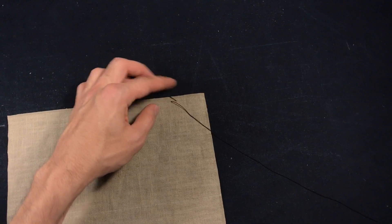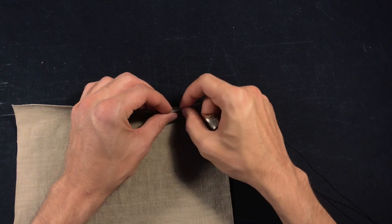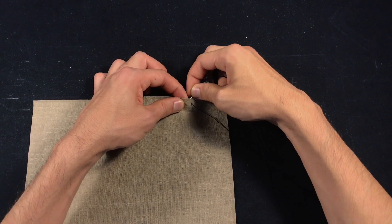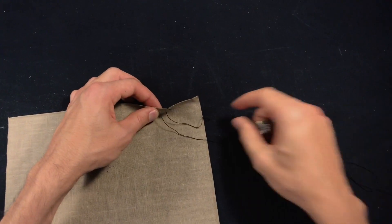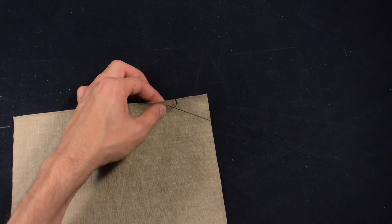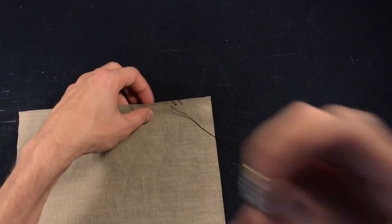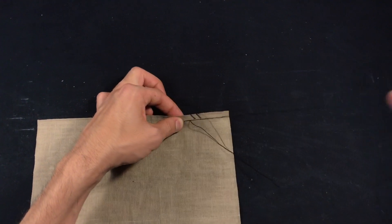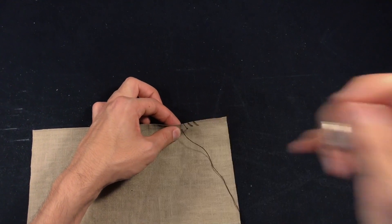And you do the same thing again and again. This is supposed to prevent the edge from fraying.